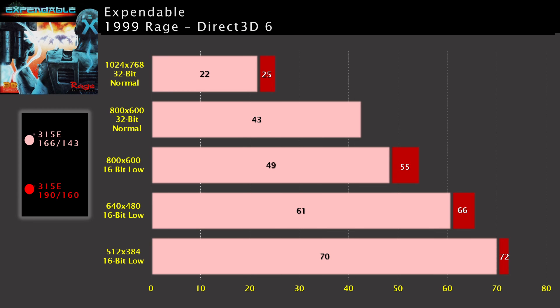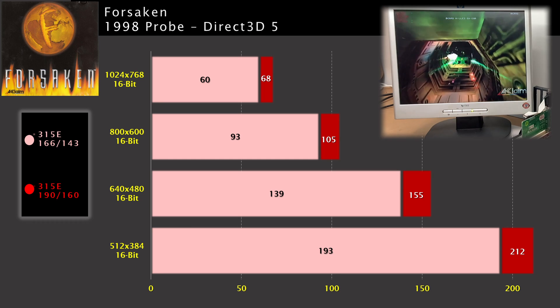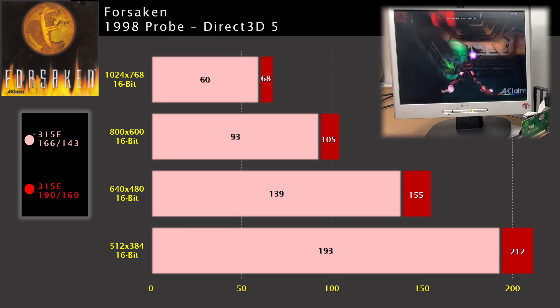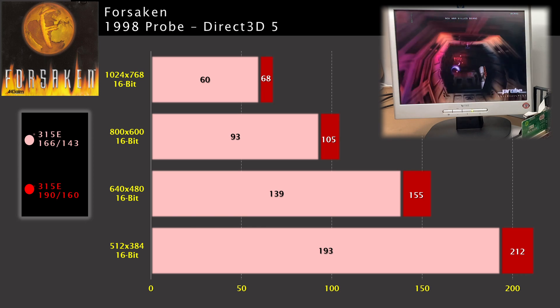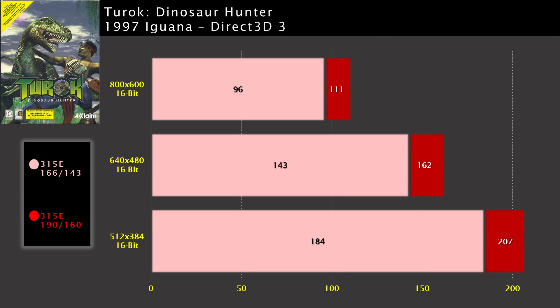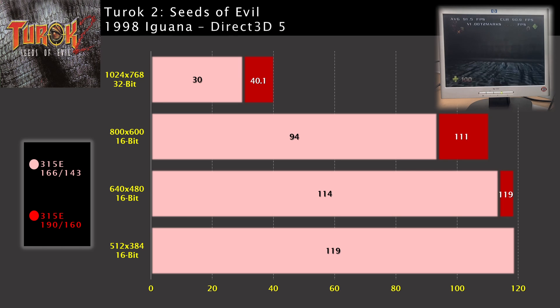Expendable gives us some decent scores using the 16-bit low quality presets. 640x480 is probably what I'd stick to, but you could push up to 800x600 or turn some features on at 640x480 with the overclock. Forsaken is a lightweight title and the 315E can handle all resolutions up to 1024x768 even with stock clocks. With Turok I expected some high scores and the 315E didn't disappoint — even at stock the 800x600 result is excellent. Moving on to Turok 2, we don't see the huge scores from Turok 1 but still get an excellent result across all resolutions tested.